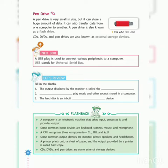CDs, DVDs, and pen drives are also known as external storage devices. All these devices which are connected to a computer externally and store data are called external storage devices. The hard disk, which we discussed first, is called an internal storage device. A USB plug is used to connect various peripherals to a computer. USB stands for Universal Serial Bus.